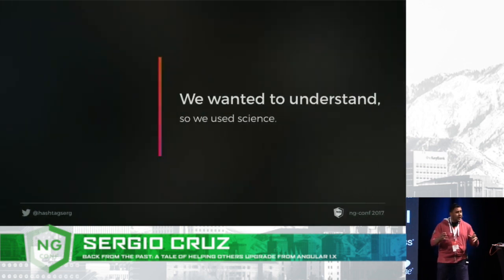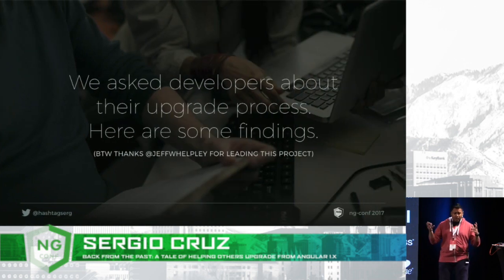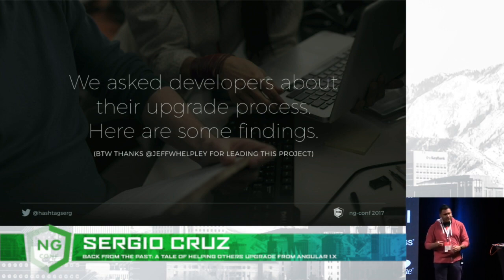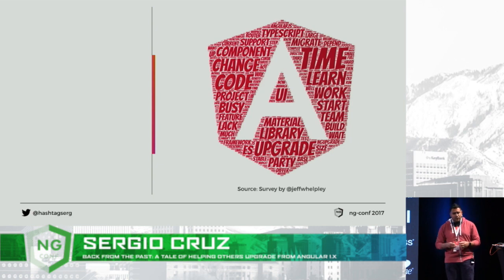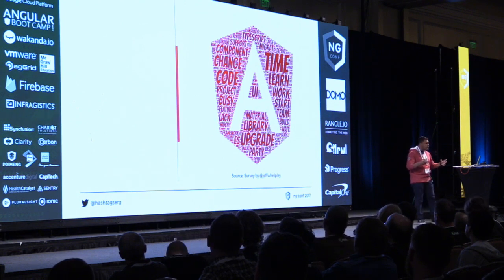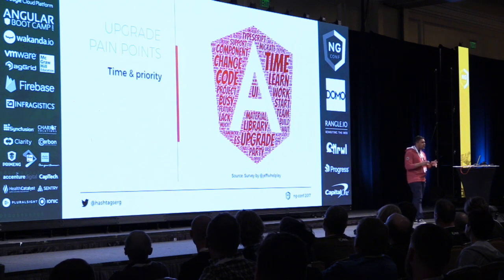I wanted to really understand whether the problems I was facing were representative of the community at large. So I teamed up with a group of really smart people and we used something called science. This was led by Jeff Welpley — thanks, Jeff. We sent out a survey asking people about their upgrade process: timeline, what tools they were using, and so on. Here are some of the findings. This word cloud with the Angular logo came from an open-ended question where we just asked people what challenges and difficulties did you run into? The first thing that comes up is time — we can see time, change, TypeScript, upgrade.